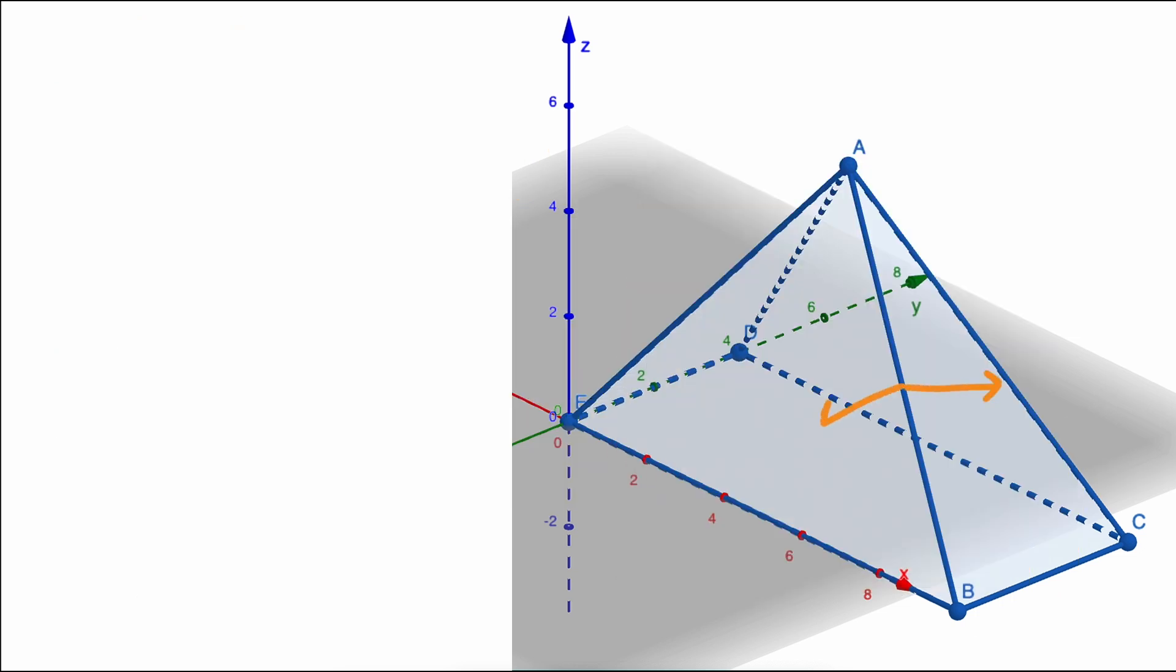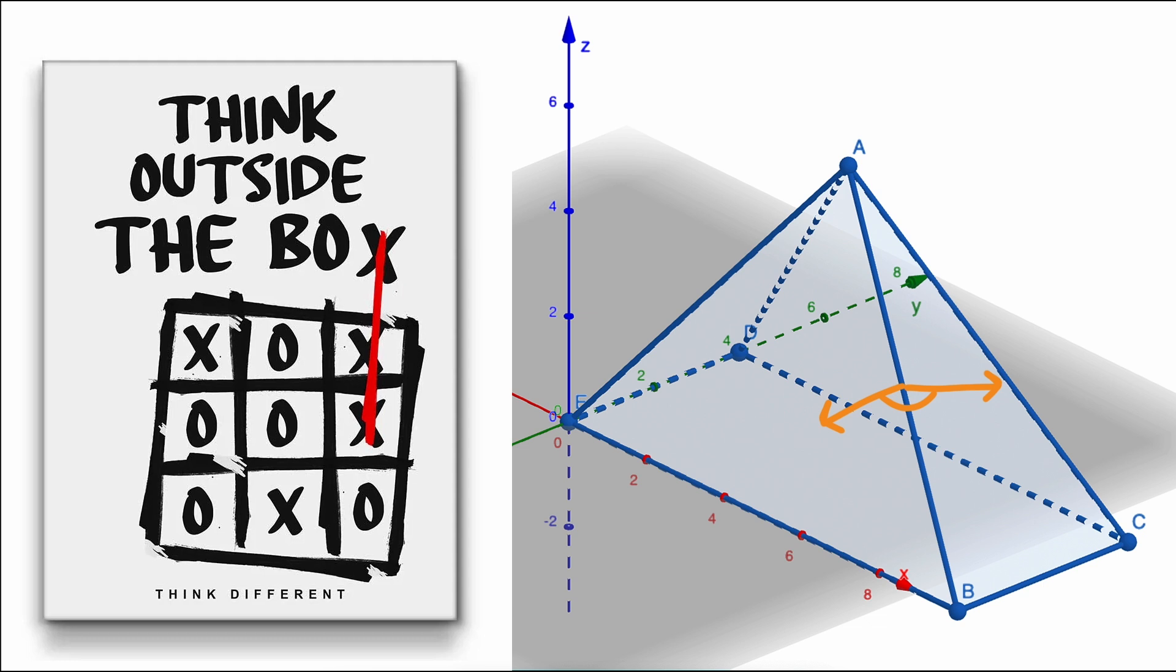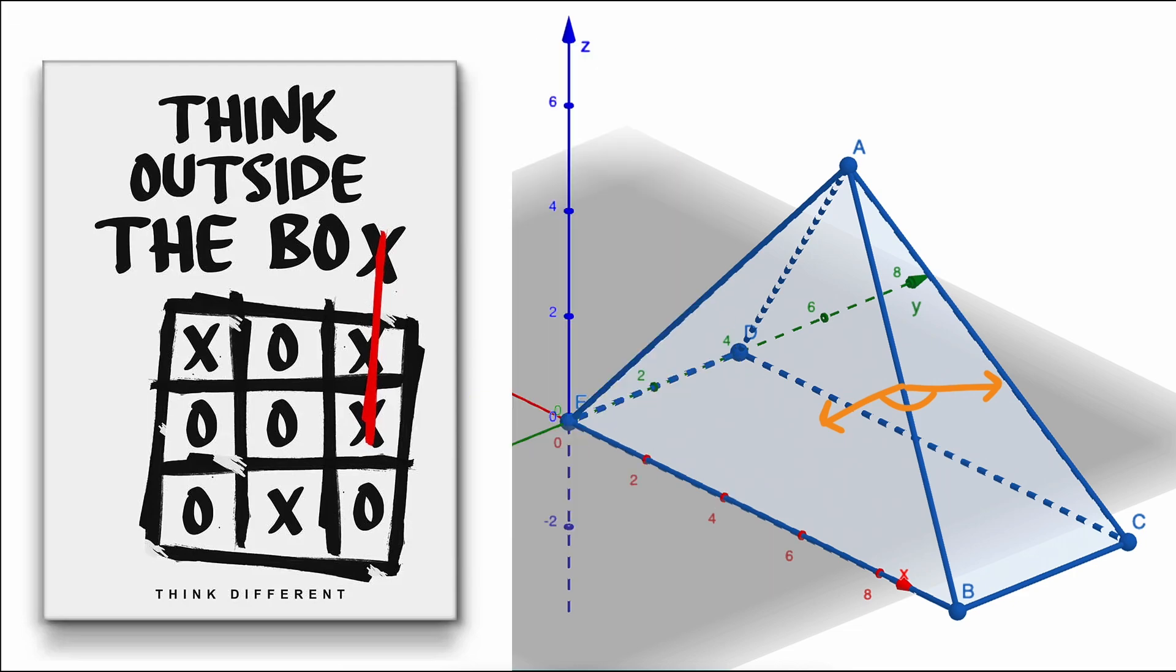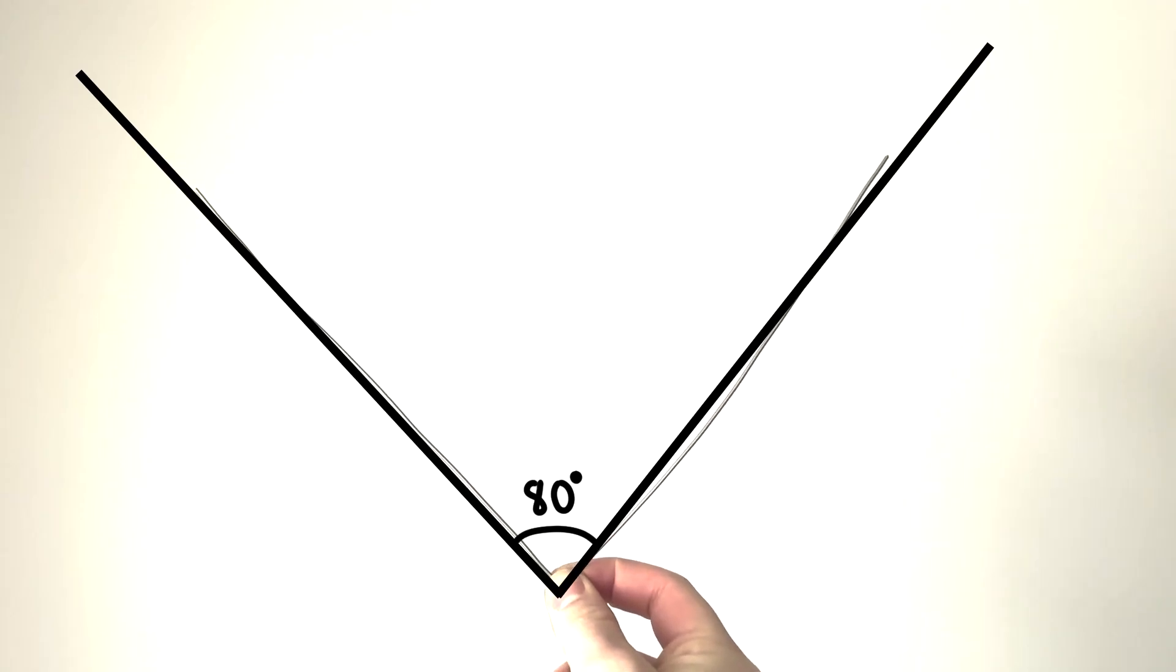The third angle is going to take some thinking outside the box. We have to be careful here, because the perspective can change the apparent measure of an angle in three dimensions. Look at this angle. When parallel to the screen, it looks about 80 degrees.